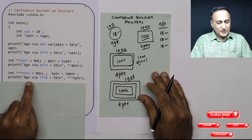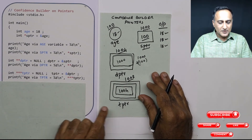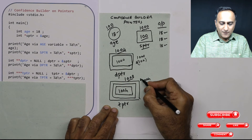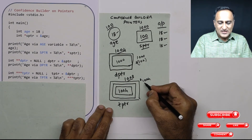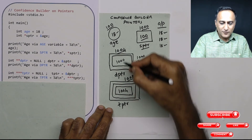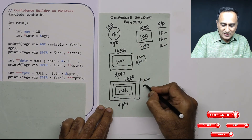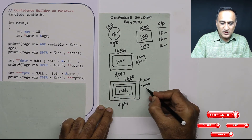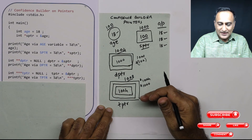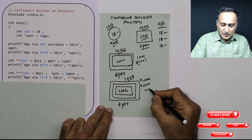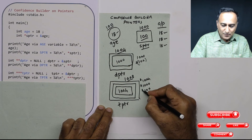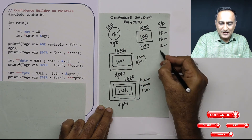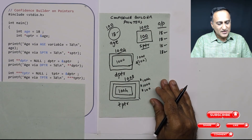Now let's try to print age using the triple pointer. If I simply print tptr it will print 1004. The first star will tell me what is the value or content at 1004, which is 1000 — that is another address. When I apply one more star to 1000, it tells me the value at 1000, which is 100. Now when I apply the last star, the value or content at address 100 happens to be 18. So 18 is again printed using the triple star.